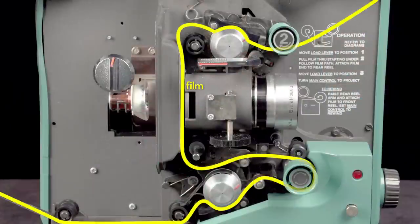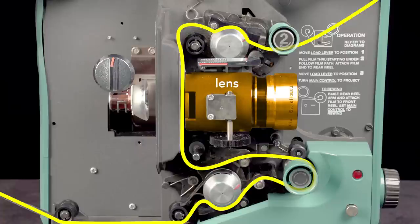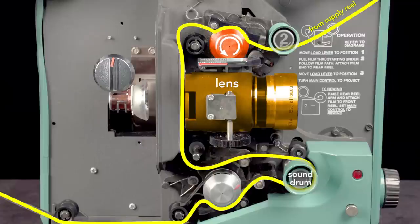The film must pause in front of the lens to project without blur, but must also move continuously for the proper playback of the sound. The top sprocket pulls the film from the supply reel continuously. A loop of slack film starts to form.